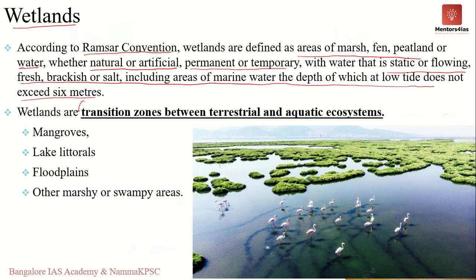The depth of marine water at low tide does not exceed six meters. Simply put, wetlands are areas of intermediate character — between deep water habitats and terrestrial habitats — and therefore it is a transitional zone in nature, which we always refer to as an ecotone. Wetlands actually form a distinct ecosystem that is flooded by water permanently or seasonally, where the oxygen-free process prevails for a considerable period of time in a year.